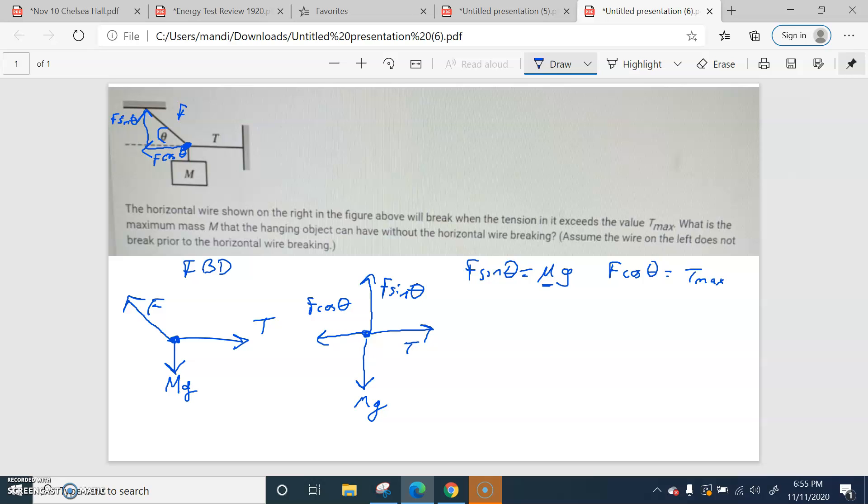We're eventually trying to solve for mass, and none of the answer choices have F in them. So let's get F by itself so we can make that go away. So I'm going to say F is T max over cosine theta.